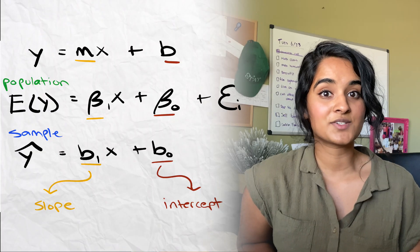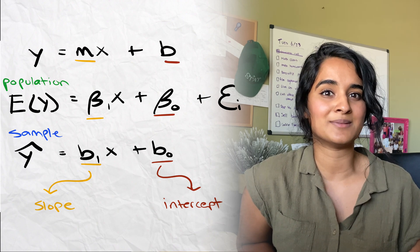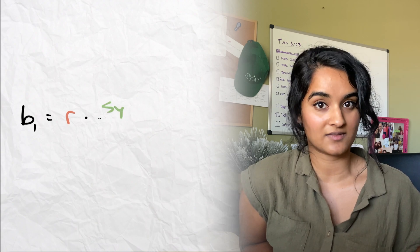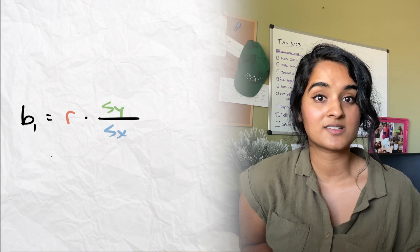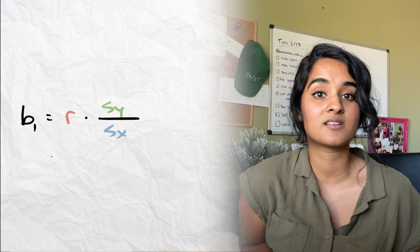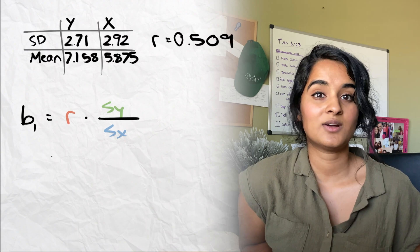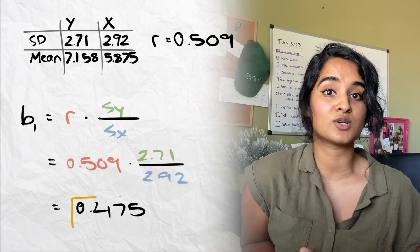The way I like to remember if something is about the population or the sample is that if it has capital Greek letters. In the population regression line, we have betas, which are Greek letters, so that tells me it's a population regression line. Now we have to calculate these coefficients. To calculate b1, we do r times s_y over s_x, where s_y is the standard deviation of y, s_x is the standard deviation of x, and r is the square root of the correlation coefficient, or the coefficient of determination. We plug in those numbers and end up with b1 = 0.475.